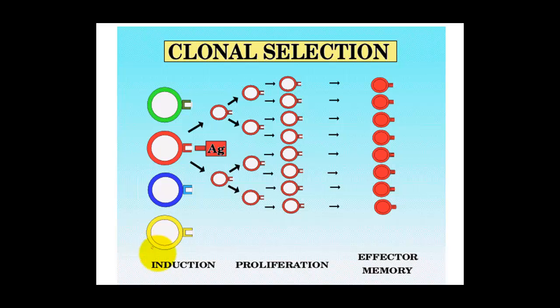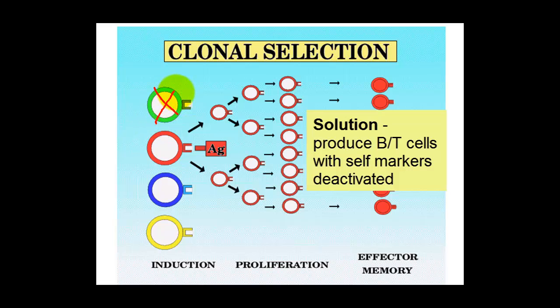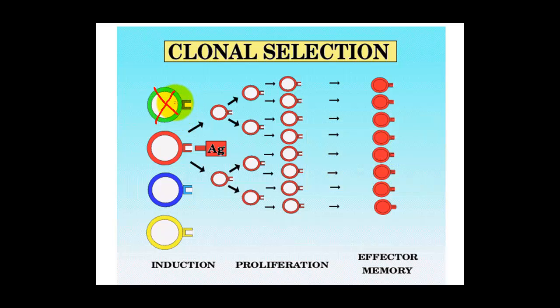So what happens in the early stage of development is the body is able to knock out the ones that recognize self. So those B and T cells don't exist. And when something goes wrong there, that's where we have autoimmune diseases.